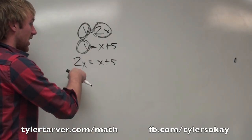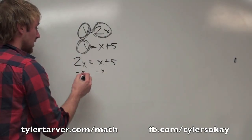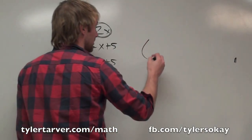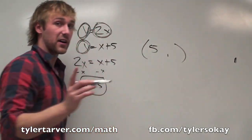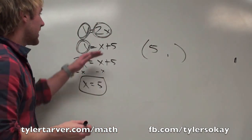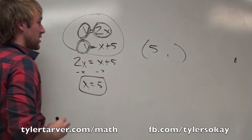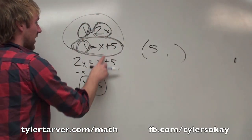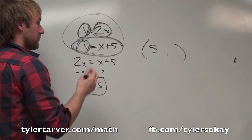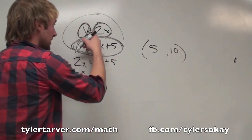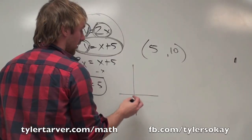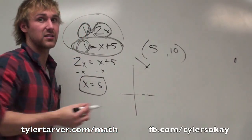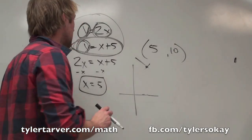So I would solve this: I subtract an x from both sides, which gives me x equals 5. I've found my x. To find the y, all I do is plug that x into either of these equations — I think this one would be pretty easy. Plug it in here: what's 5 plus 5? 10. So y equals 10. That means these two lines are going to cross on a graph at the coordinate (5, 10). That's where they'll cross.